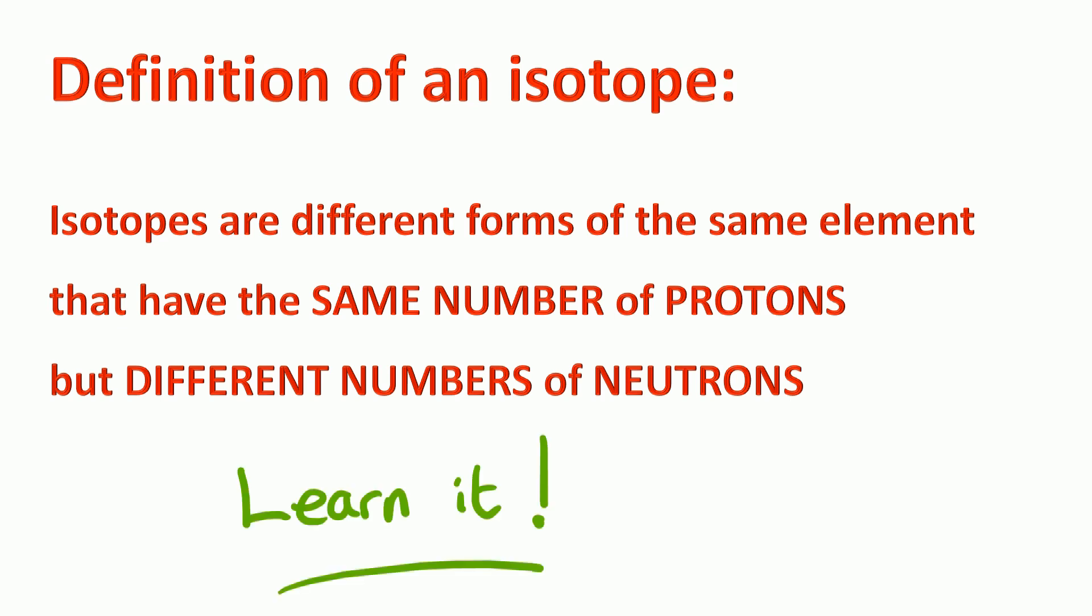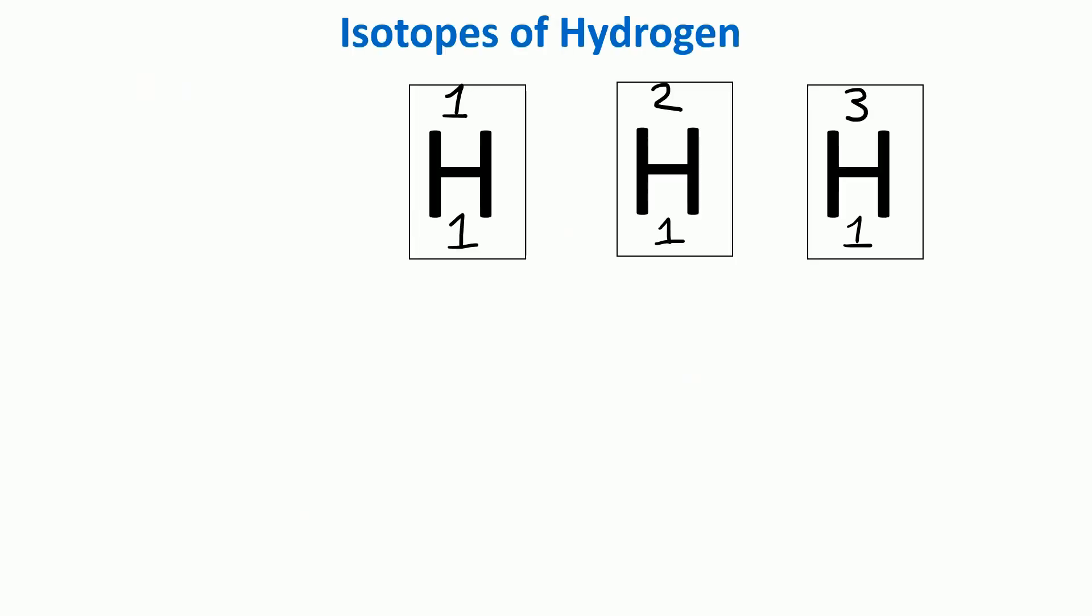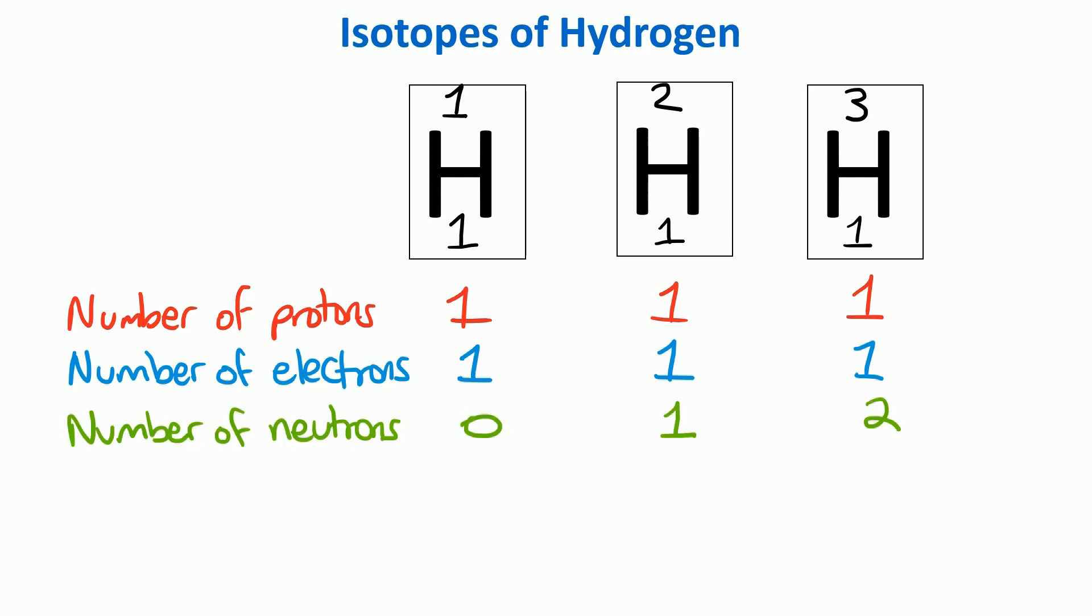We'll look at one more example before we get on to that all important exam question. This time we've got isotopes of hydrogen. We can see from the atomic number that each isotope of hydrogen has one proton and one electron. But the first isotope has no neutrons, the second one has one neutron, and the third type of hydrogen has two neutrons.